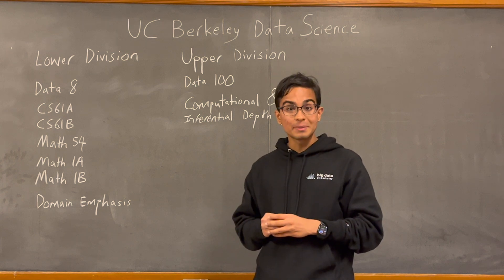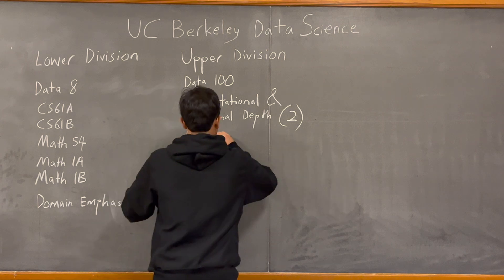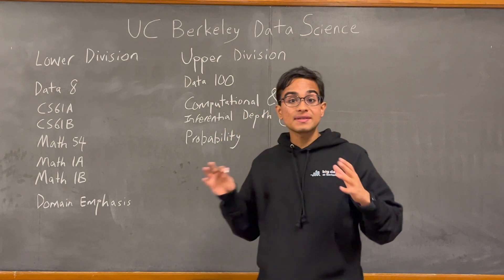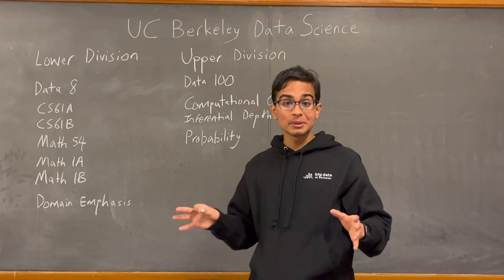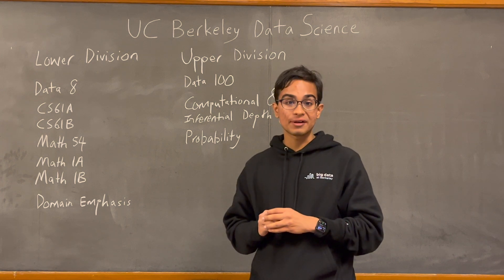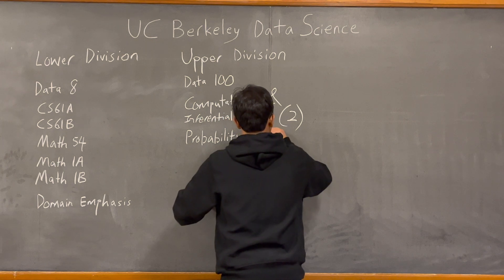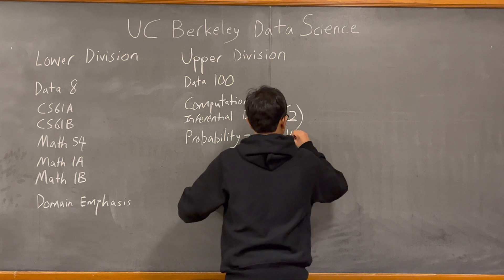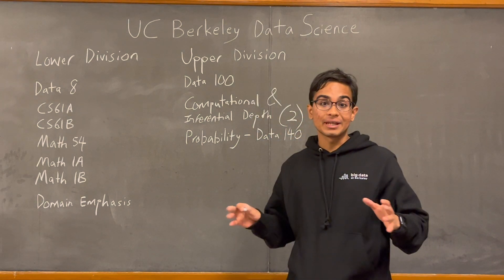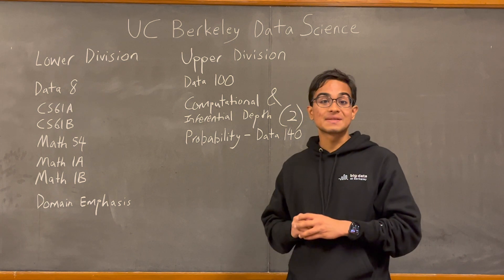Next, Probability. Students are required to take one course in Probability, and the most popular course is Data 140. Next, Modeling, Learning and Decision Making. There are five classes that satisfy this, but the most popular one is Data 102.